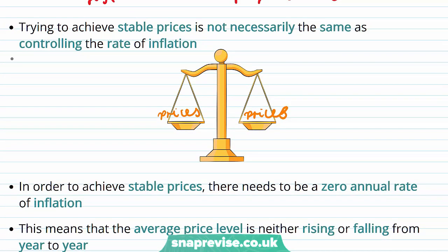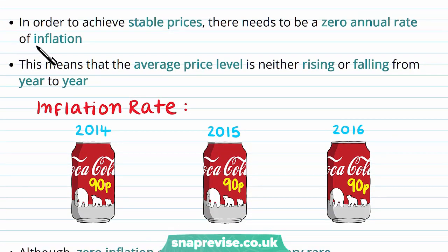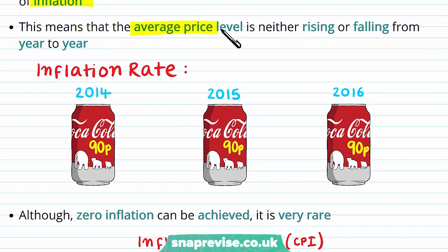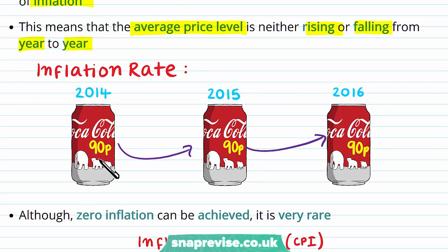Inflation is related to prices, so if we want stable inflation, why not have stable prices? A stable price means a zero annual rate of inflation — the average price level is neither rising nor falling from year to year. For example, a can of Coke stays at 90p from 2014 to 2015 to 2016, giving a zero percent inflation rate. However, a zero inflation rate is very rare in practice.